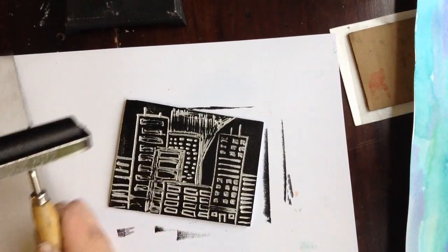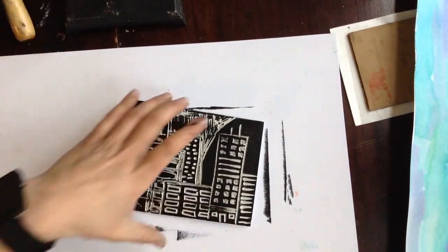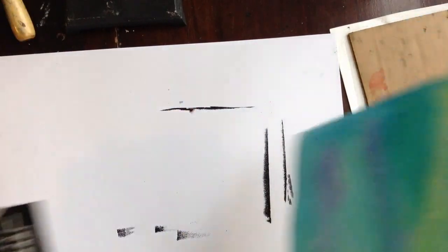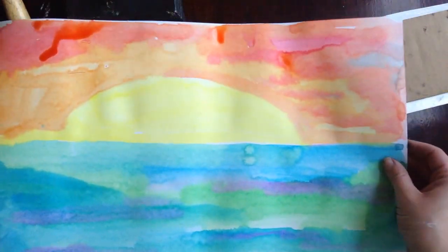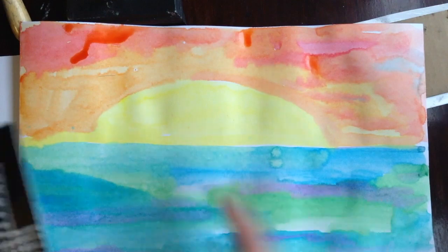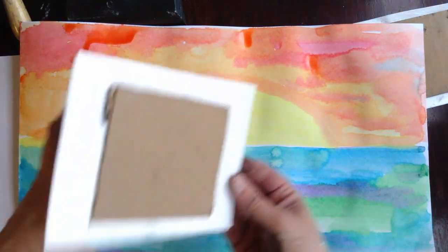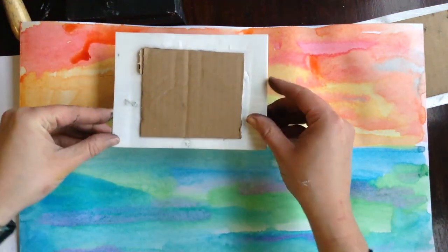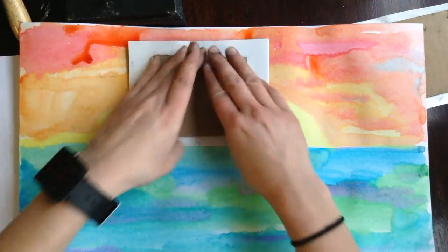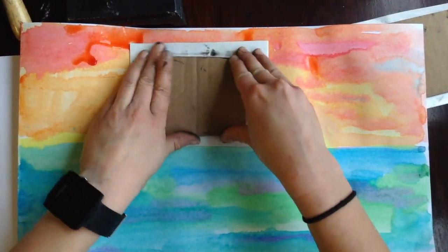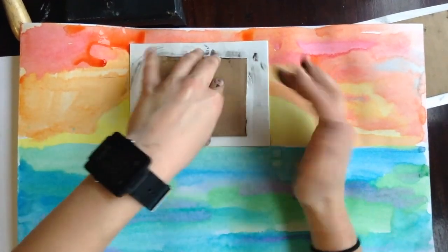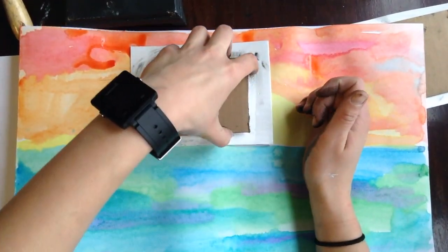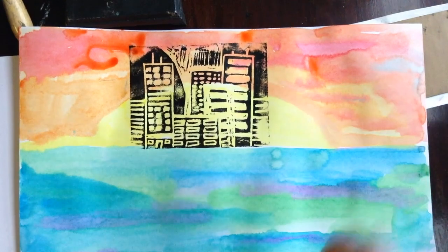Once you have a good amount of ink on your city, you will take your landscape that you made. Take your city, line it up where you want it and press. And use your handle to lift up.